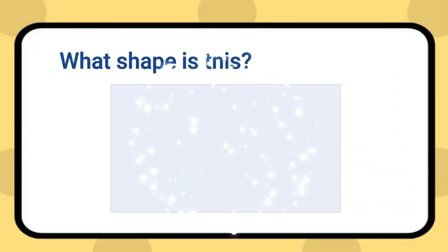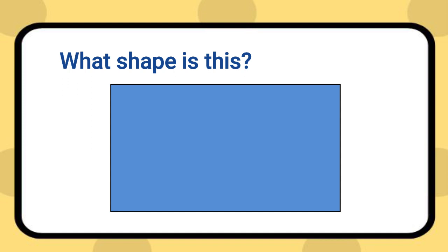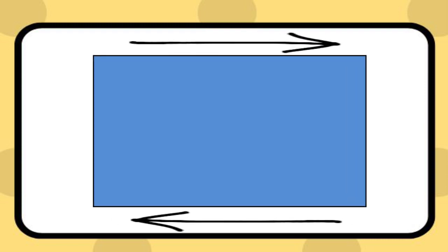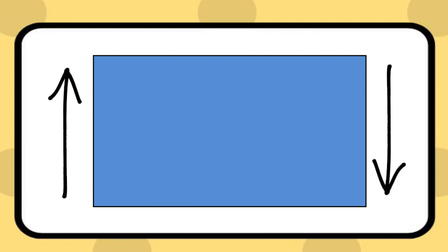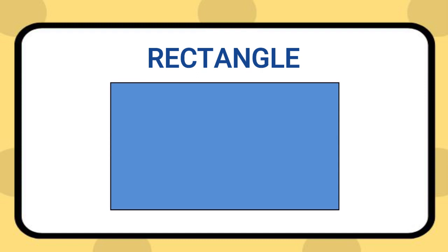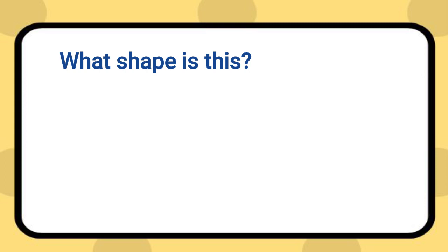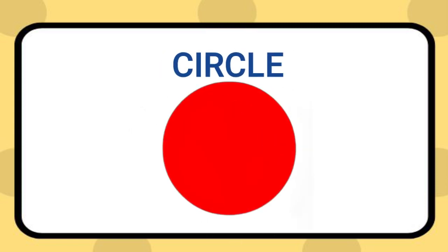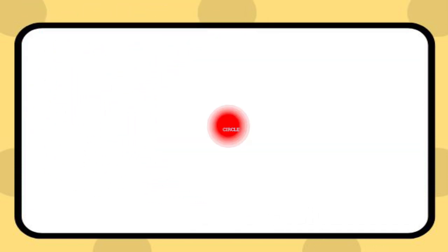What shape is this? This is a rectangle. It is round. It has no corners. Circle.